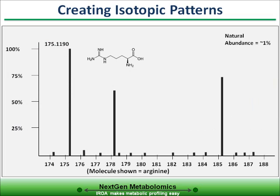Almost all of the carbon in living things contains two isotopes of carbon, C12 and C13. Generally on Earth, C12 makes up almost 99% of the available carbon, and C13 is present at approximately 1%. This means that in a mass spectrometer, a compound such as arginine, shown here, will have a base peak at 175.119 AMU, and a very small peak, called an M+1, at 176.122, that is approximately 6% of the base peak's height.